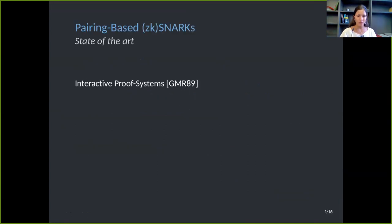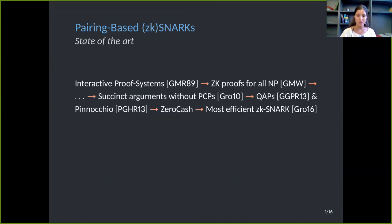Since the introduction of interactive proof systems in 1989, a huge line of research has brought us to what is nowadays the most efficient construction of a SNARK due to Groth in 2016. When I talk about efficiency, I mean we have a proof system where a prover wants to convince a verifier that some relation holds, and we consider the work the prover has to do, the amount of information they have to send back and forward, and the work of the verifier as well.